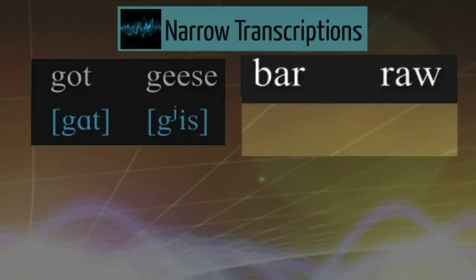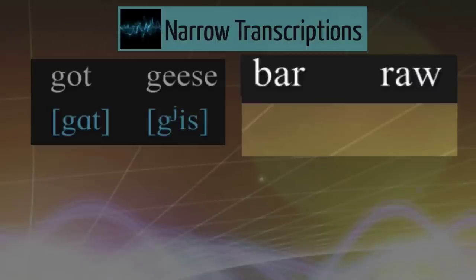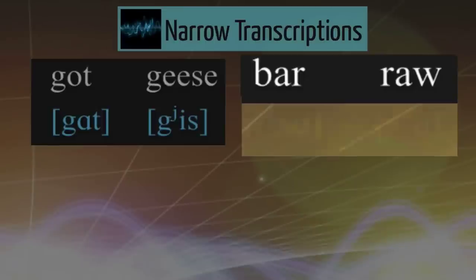Let's take the words 'bar' and 'ra.' Does 'bar' end with the same sound that 'ra' starts with? Well, yes, in some sense, but if you really look closely, the pronunciation of the r in 'ra' involves protrusion of the lips — 'ra' — in a way that the pronunciation of that same sound in 'bar' doesn't. It has to do with the placement of this sound: if it's at the beginning of a syllable or word, as in 'ra,' then there's lip protrusion and rounding, and otherwise there isn't.